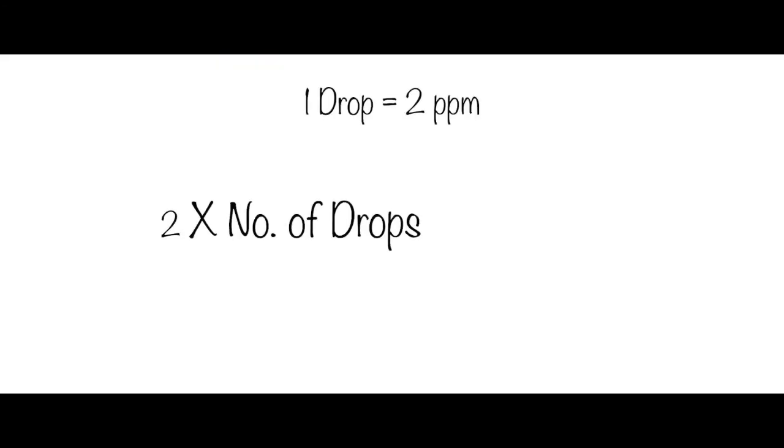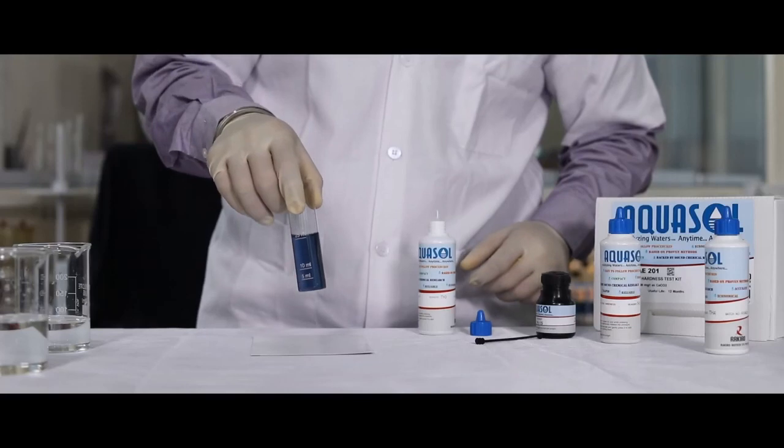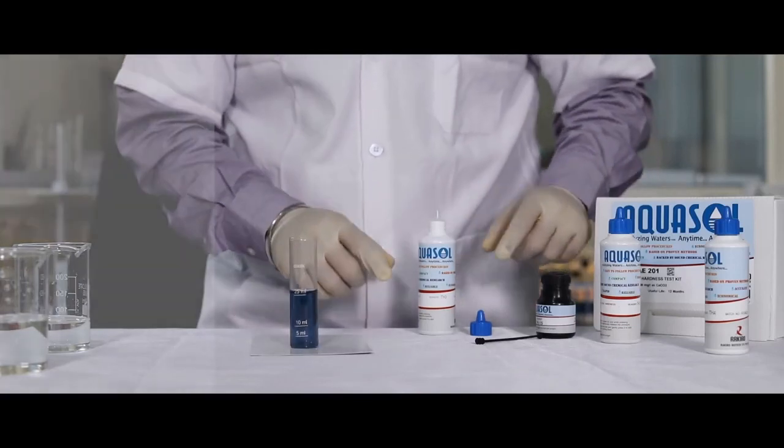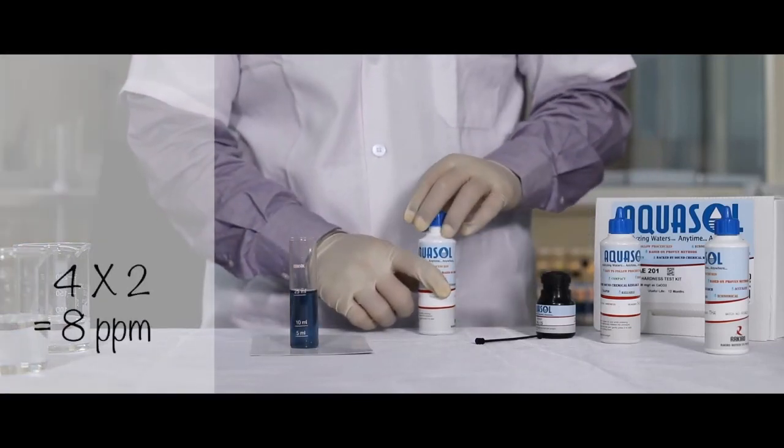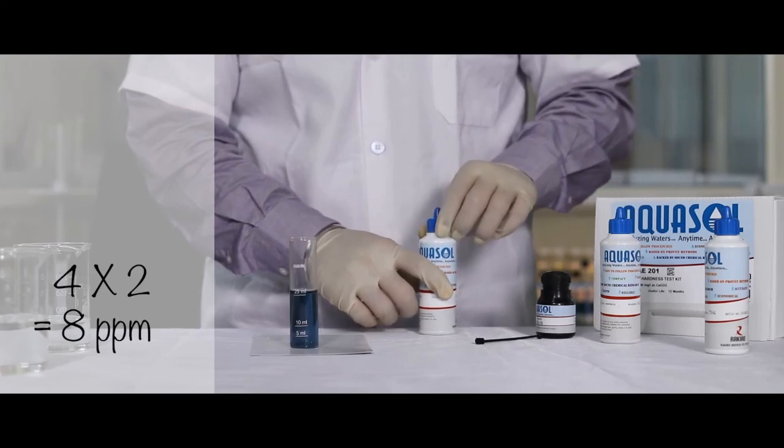Number of drops of TH3 reagent multiplied by 2 is the hardness of the sample. For example, 4 drops of TH3 reagent was added, that is 4 multiplied by 2, which is 8 ppm.